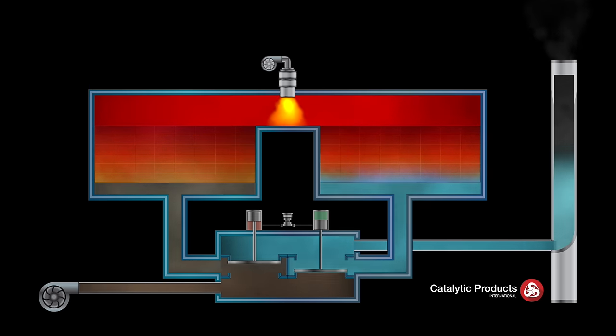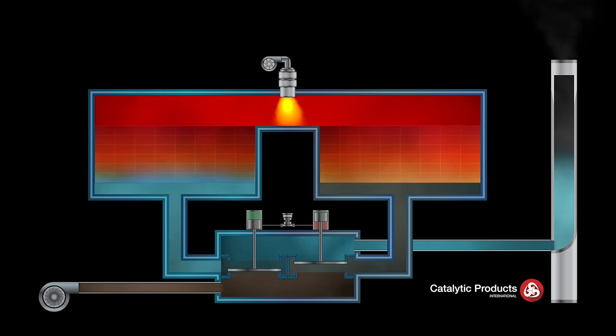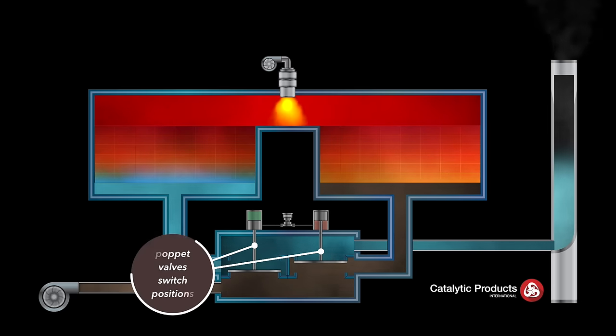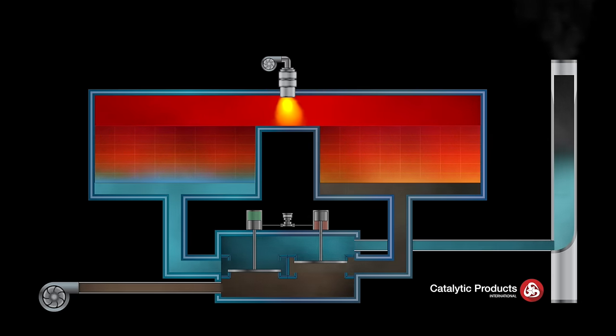Every three to six minutes, the process of airflow reverses direction as the poppet valves switch positions, allowing the heat captured in the ceramic media from the exiting clean air to heat the incoming process air.